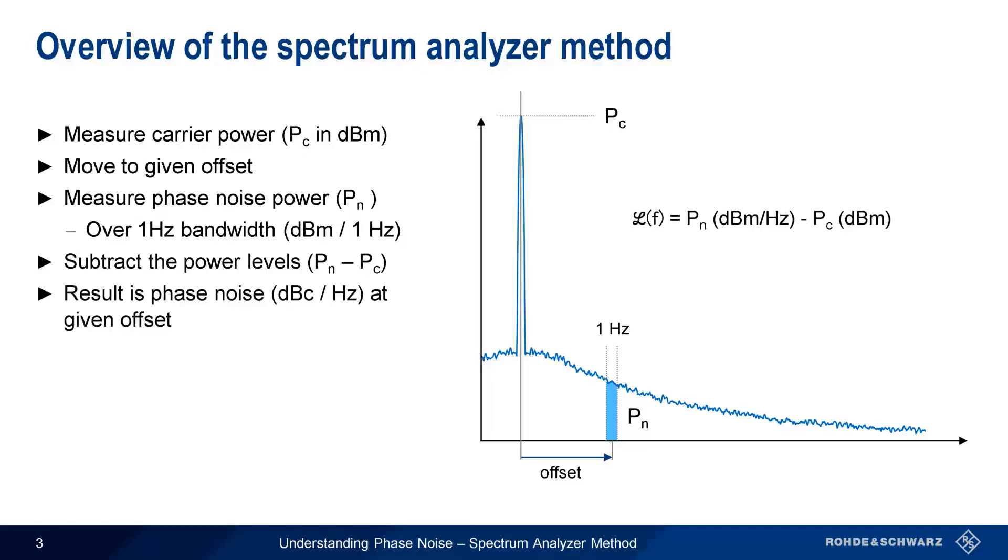Usually these measurements are repeated for various offset values, and the results can be displayed either graphically or as individual spot noise values in a table. When making phase noise measurements with a spectrum analyzer, there are two additional steps that we need to take: normalization and shape correction.